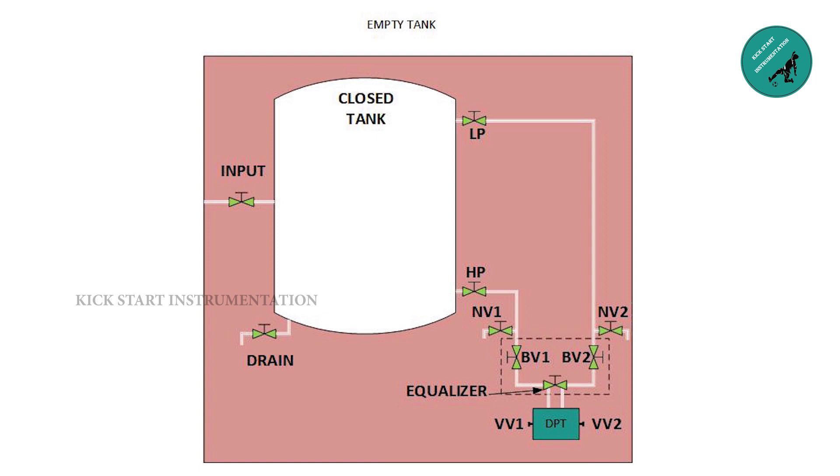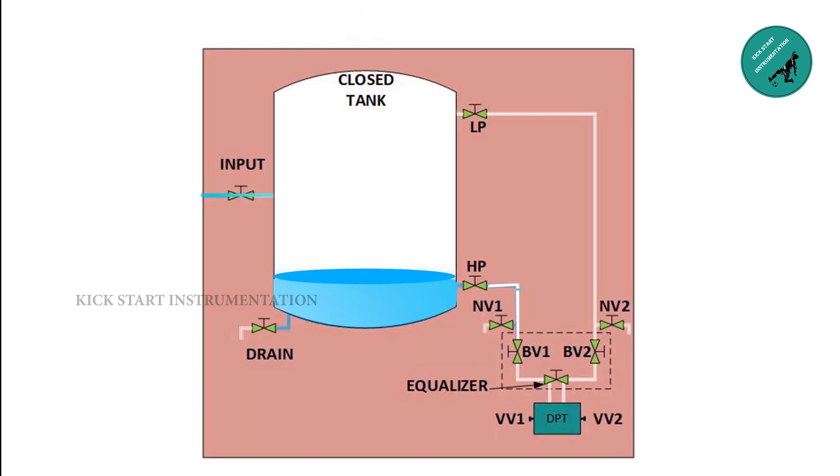Differential pressure transmitter itself has two vent valves, which are vent valve 1 and vent valve 2. Now let us make sure that all the valves are closed.